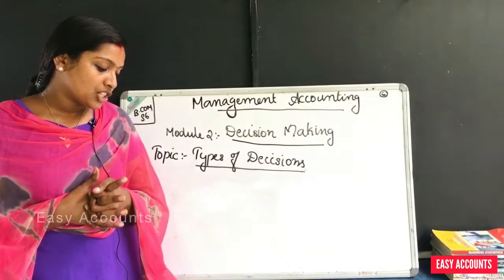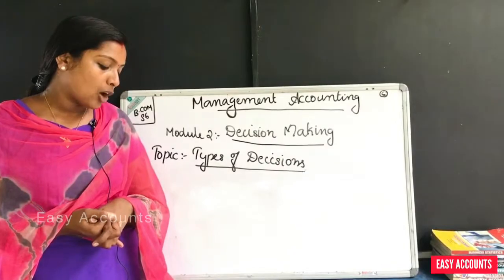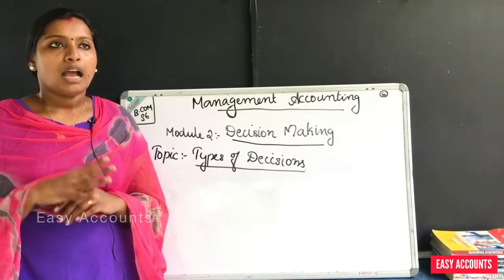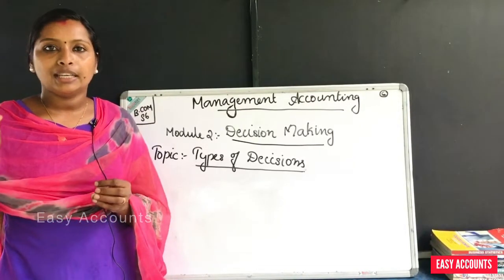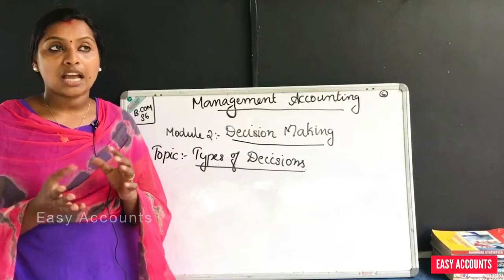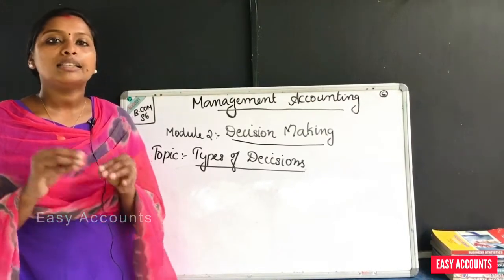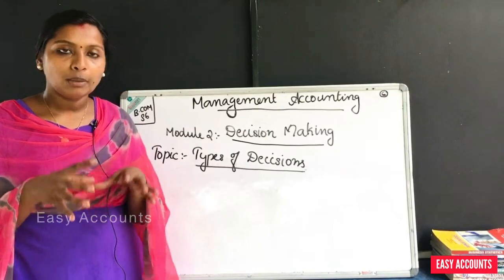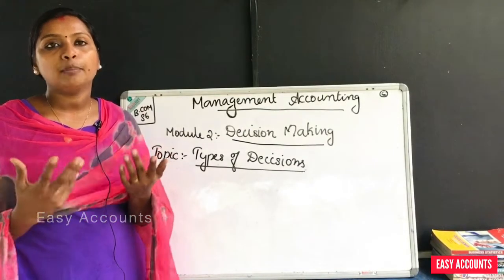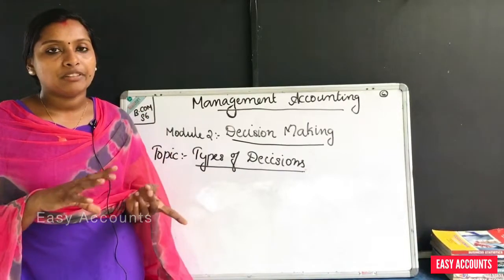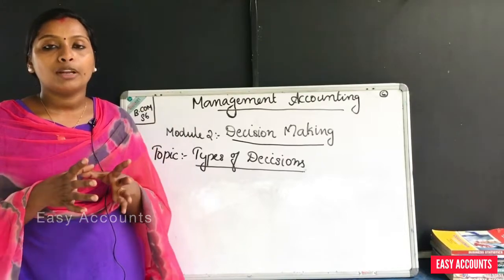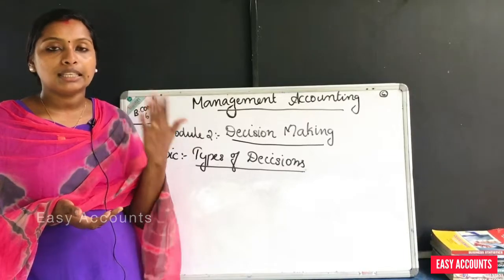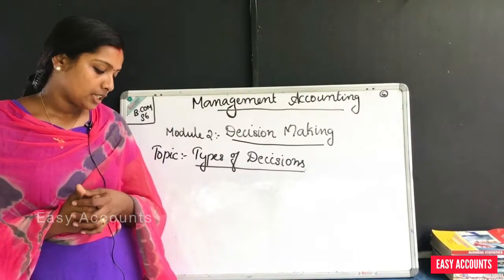Mechanical decisions are taken when the problem is simple and the output is certain and clear. We can find the outcome clearly. Judgmental decisions are also simple, but we can only predict the outcome — it may be complex. Mechanical and judgmental decisions are simple, and we can predict the outcome.